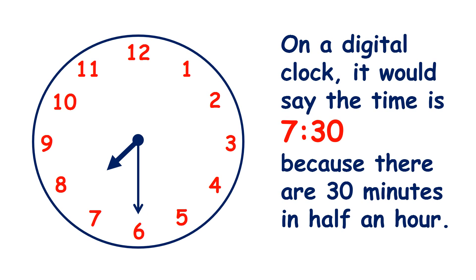Remember: an hour is 60 minutes, so half an hour is 30 minutes, because 30 plus 30 is 60.